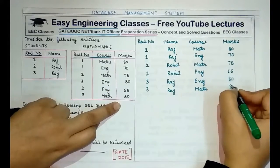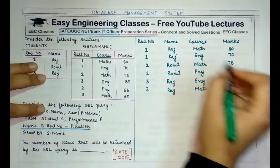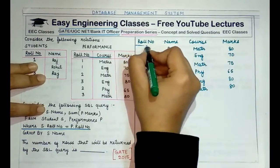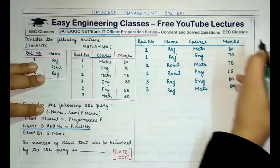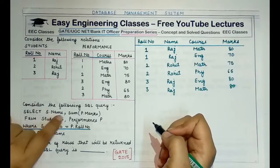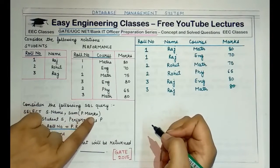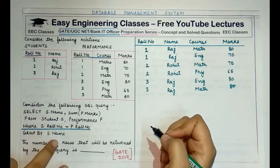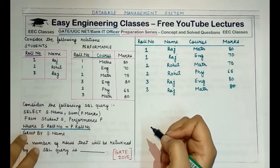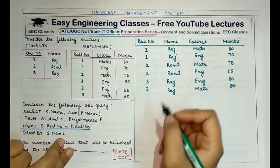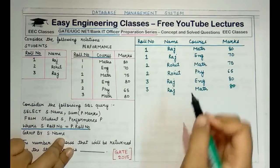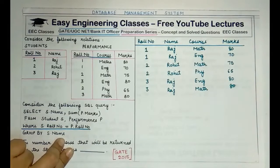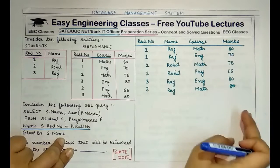This is the intermediate table resulting from the join. From this table, we select the name and the SUM of the marks column, where the sum is grouped by name. We select each distinct name and group all corresponding marks together.